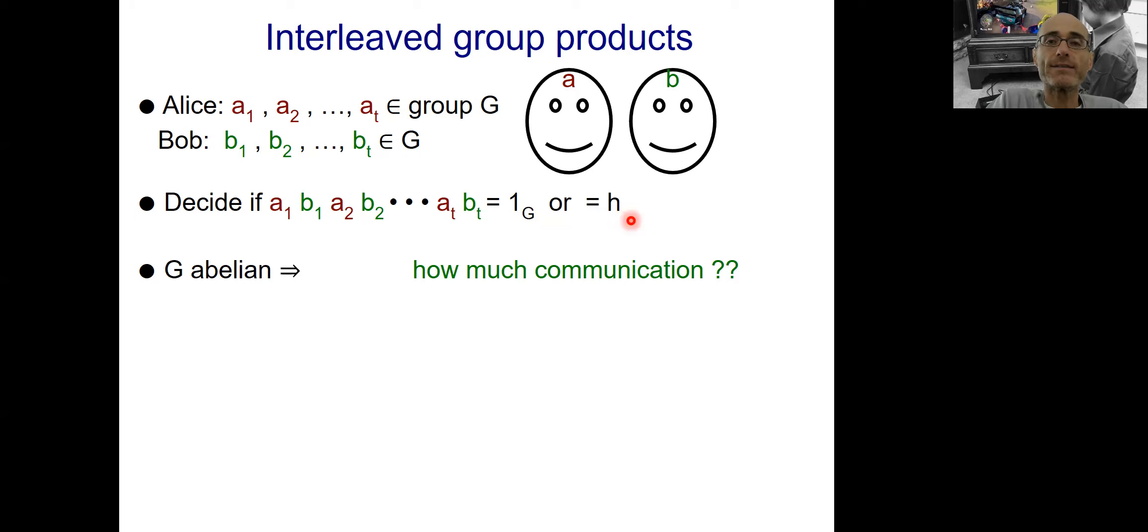Now, the communication complexity of this problem depends on the group. So let's first consider the case in which G is abelian. Then how much communication do you think this needs? Think about it.